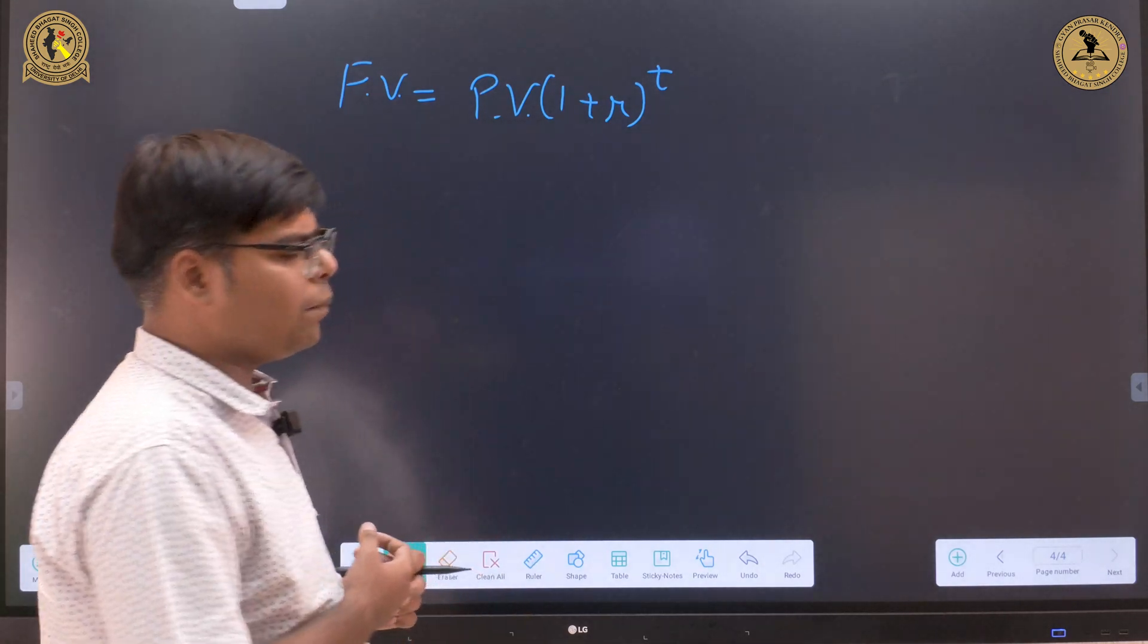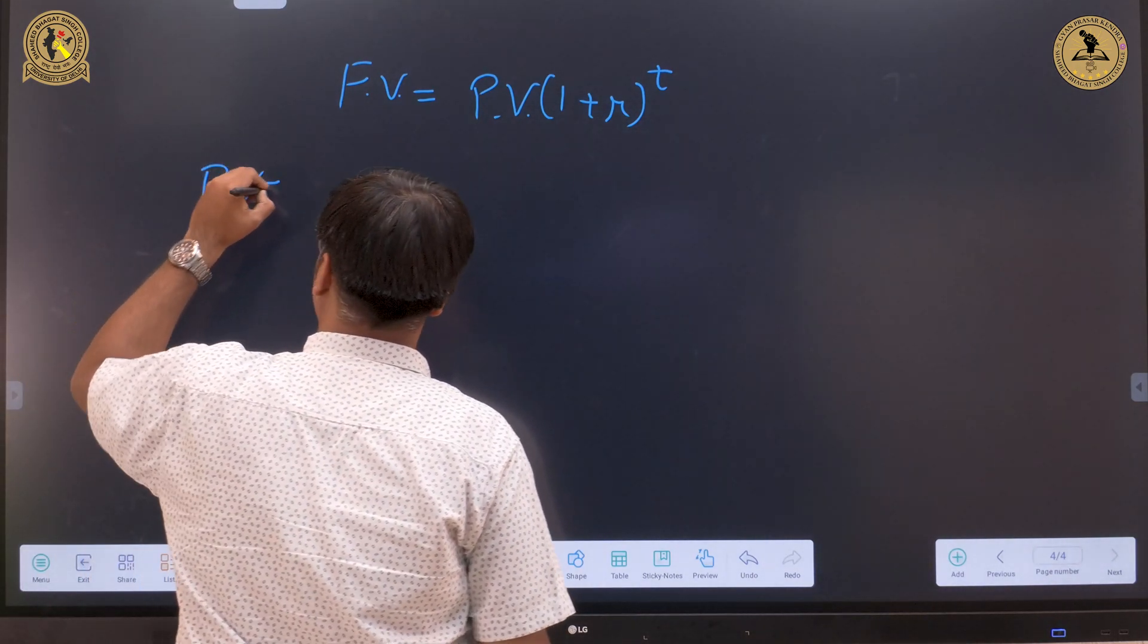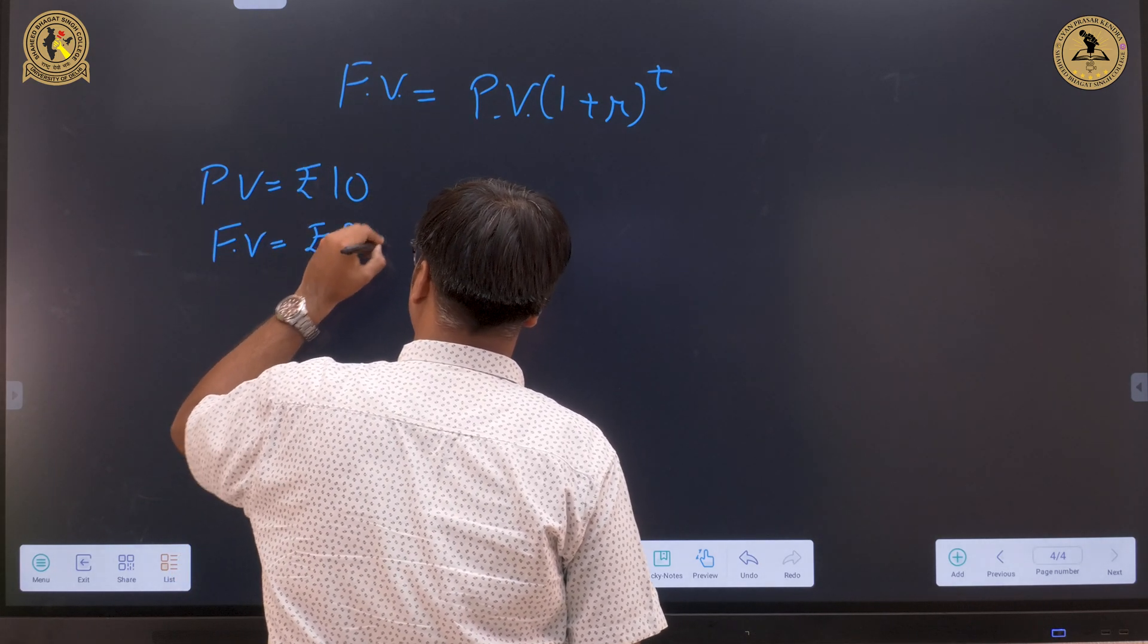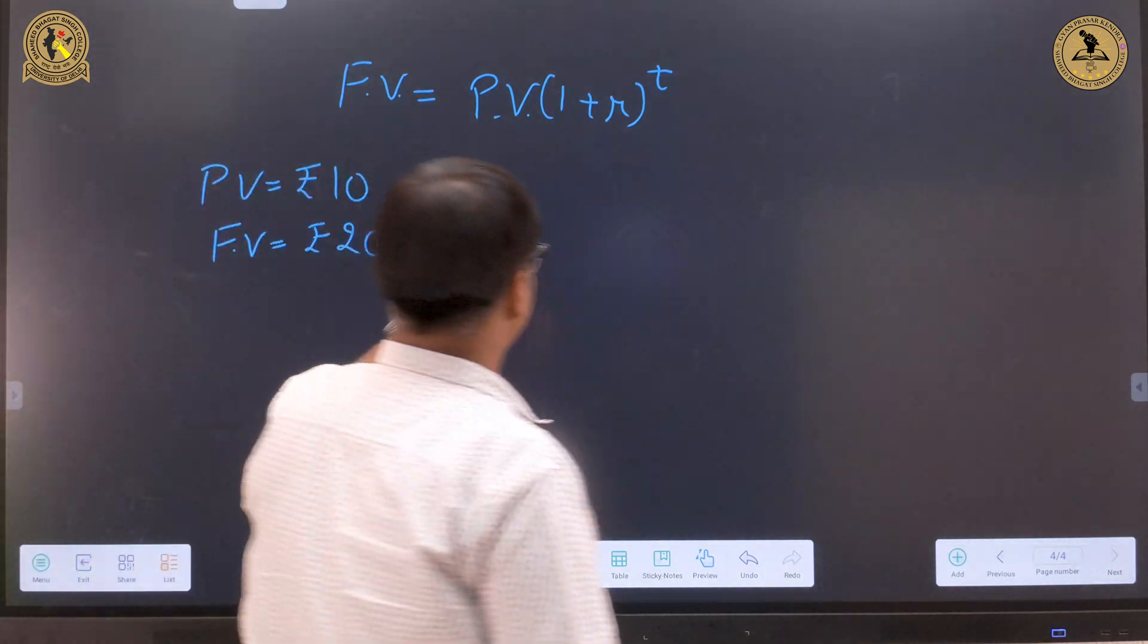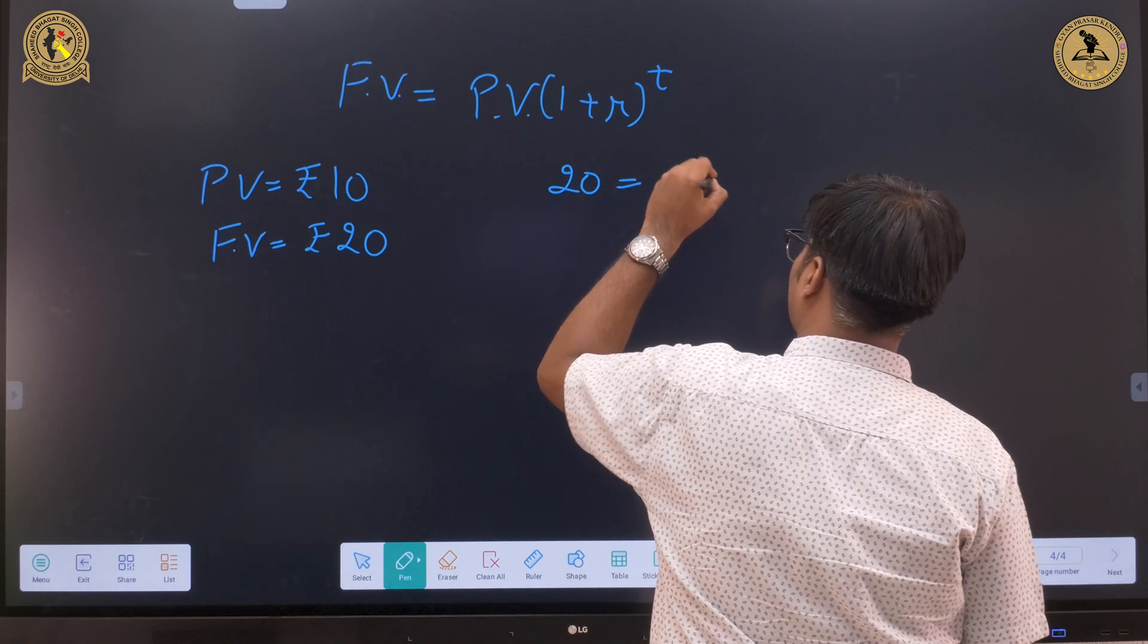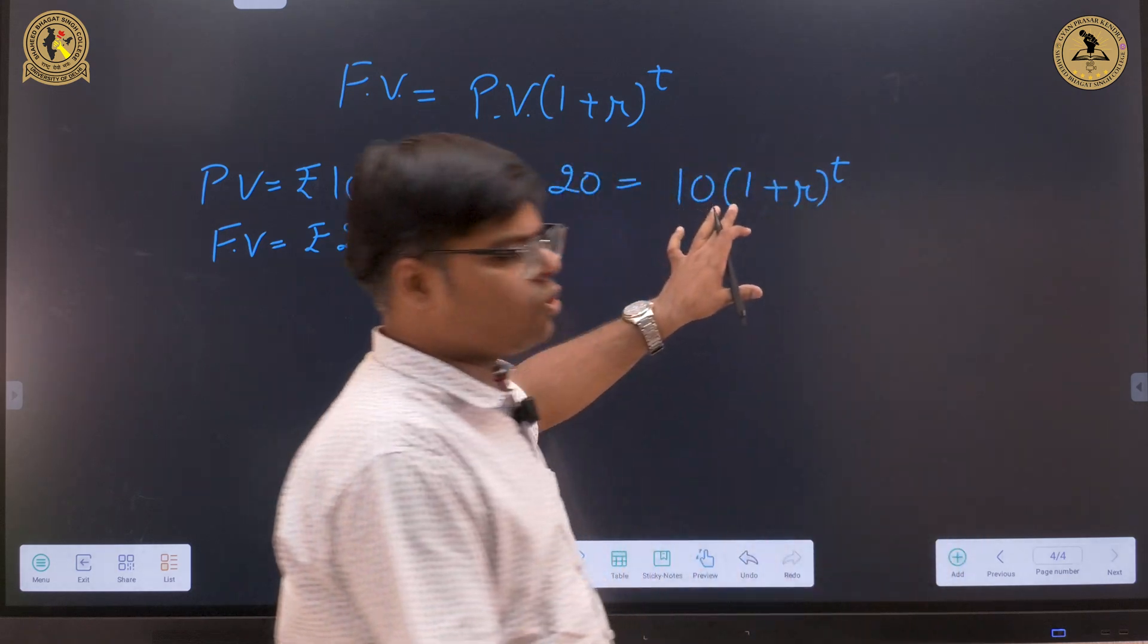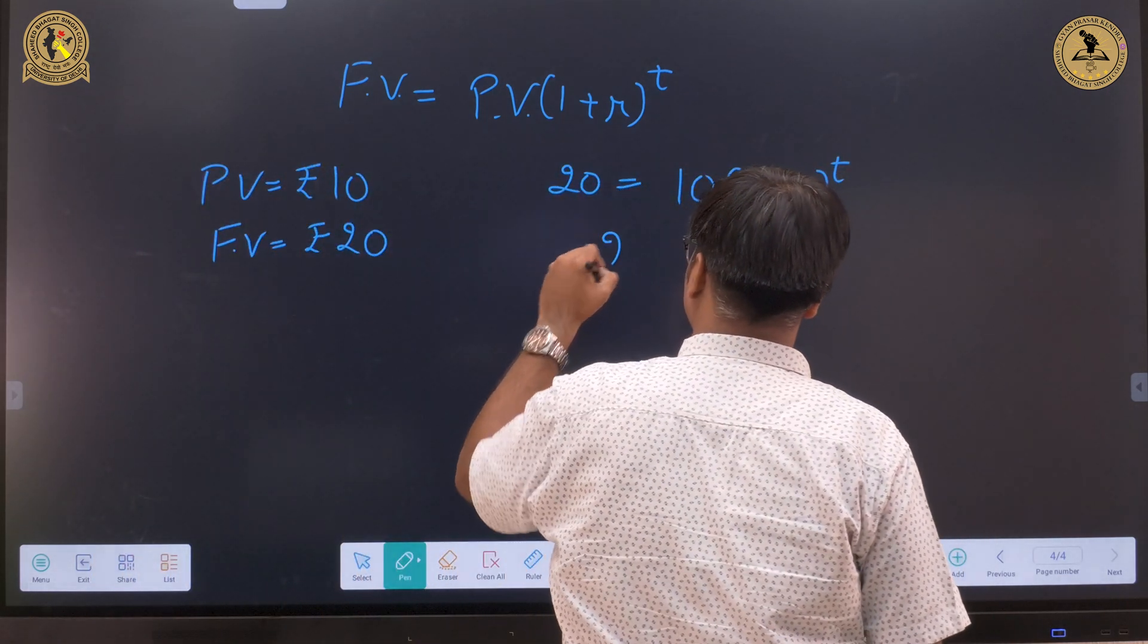Let us take one example. For example, if I am saying the present value is 10 rupees, future value is 20 rupees. To put this information in this formula, it comes out to be 20 equals 10 multiplied by (1 + r) raise to power t, which again, this is the final equation.